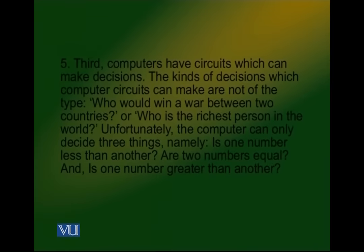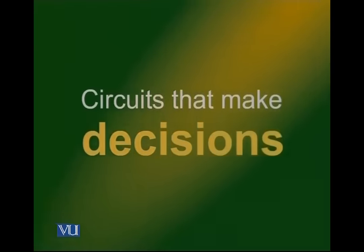Paragraph five: 'Third, computers have circuits which can make decisions. However, the kinds of decisions computer circuits can make are not of the type — who would win a war, or who is the richest person in the world. Unfortunately the computer can only decide three things: is one number less than another, are two numbers equal, and is one number greater than another.' The topic is that circuits make decisions; the main idea is that the computer can only make logical decisions.